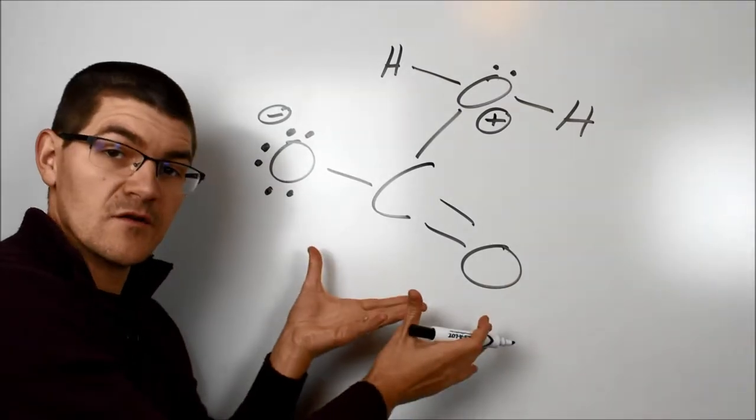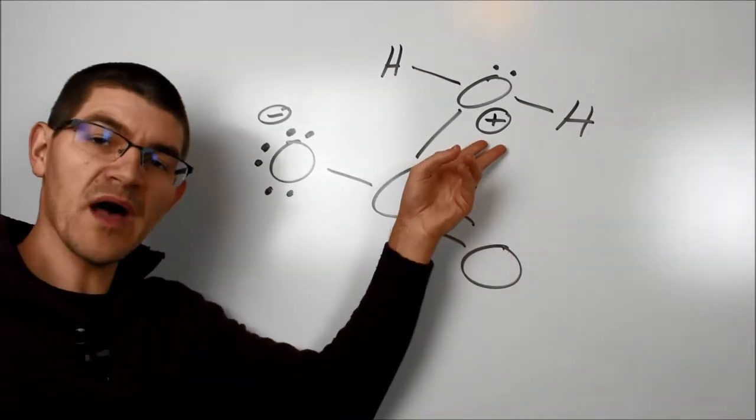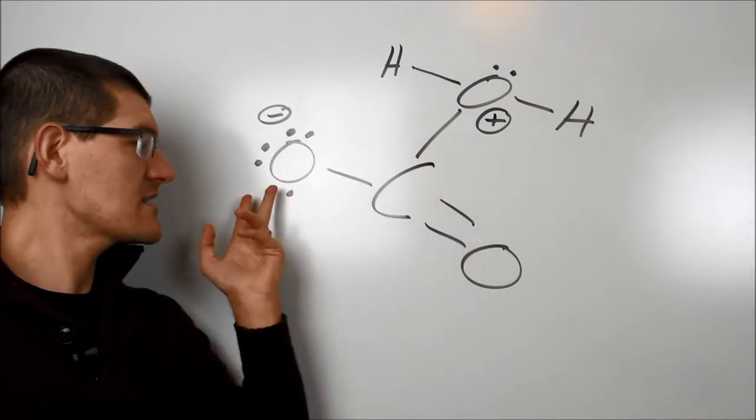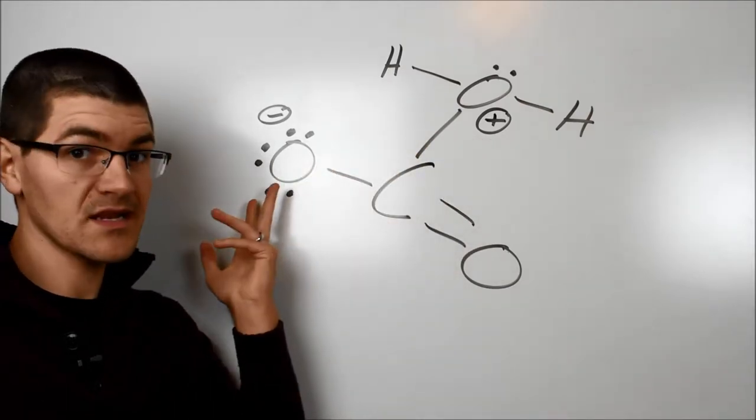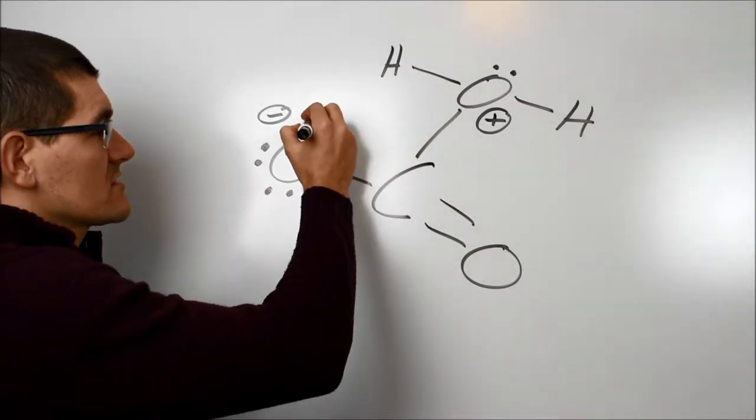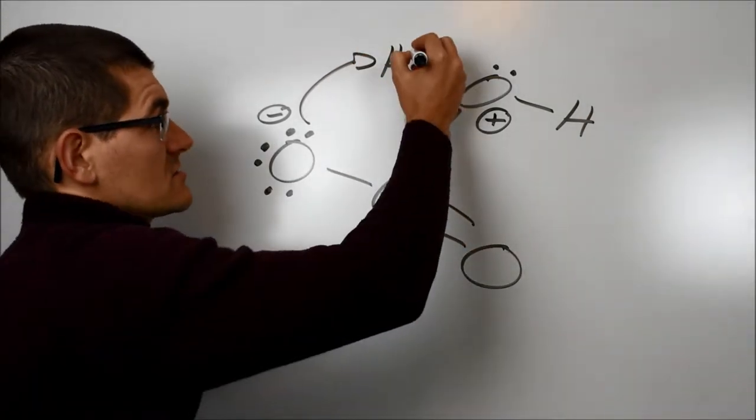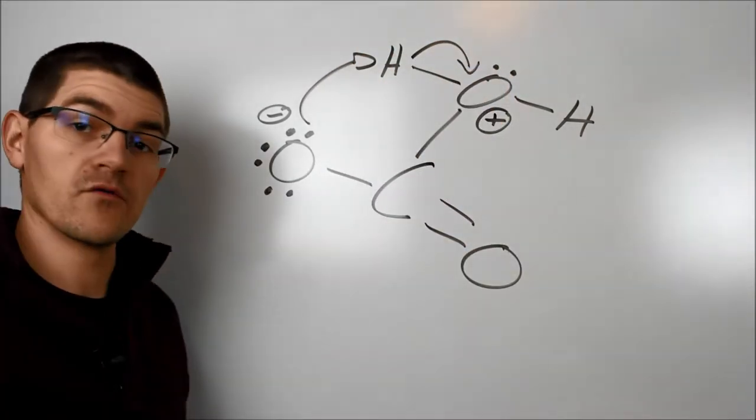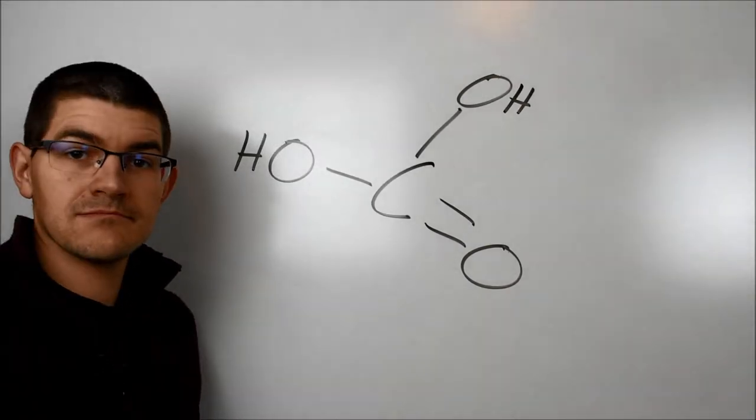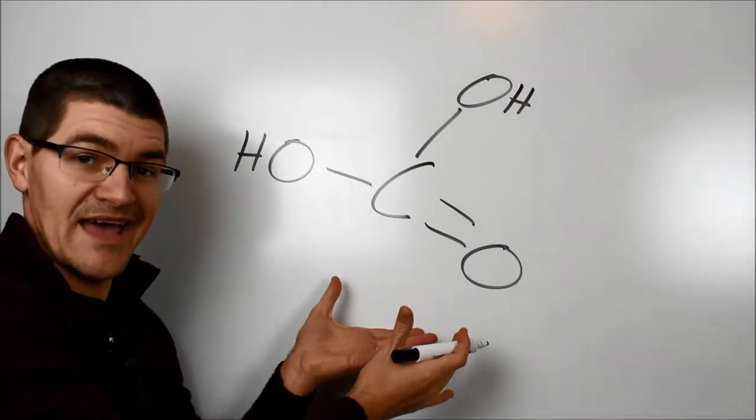Which leaves us with this intermediate here. It's not great because we have a fully positive oxygen with too many bonds and an oxygen over here with too few bonds and a negative charge. What happens is the oxygen comes over here and picks off the hydrogen from that positively charged oxygen. The hydrogen's electrons go back over to the oxygen, leaving us carbonic acid.